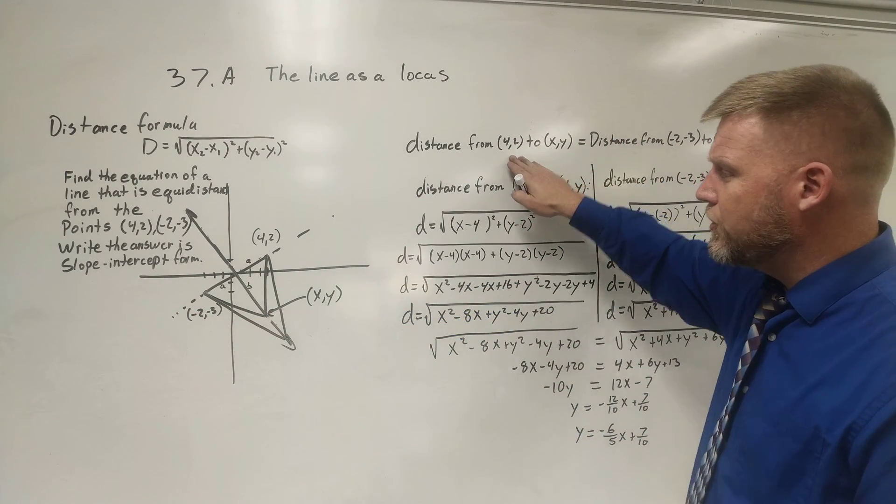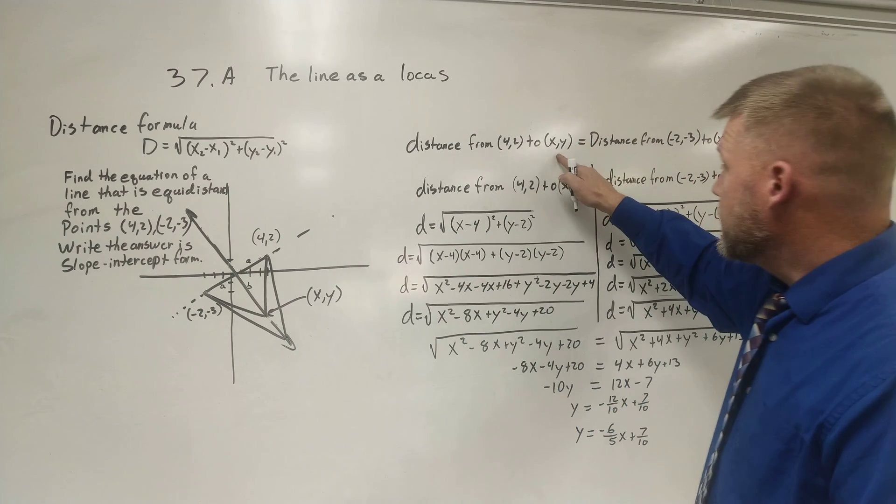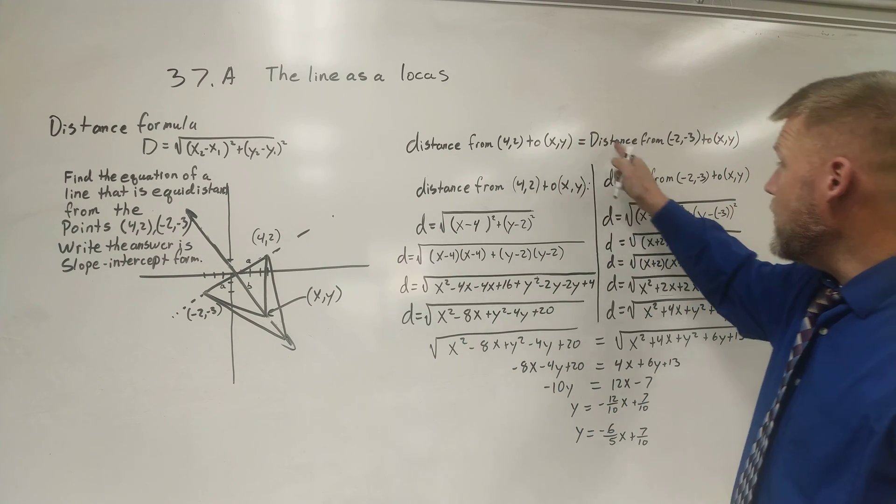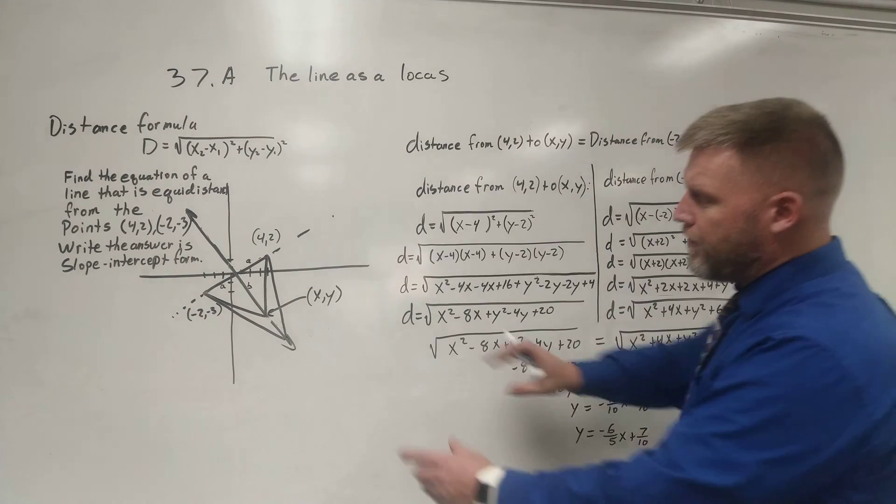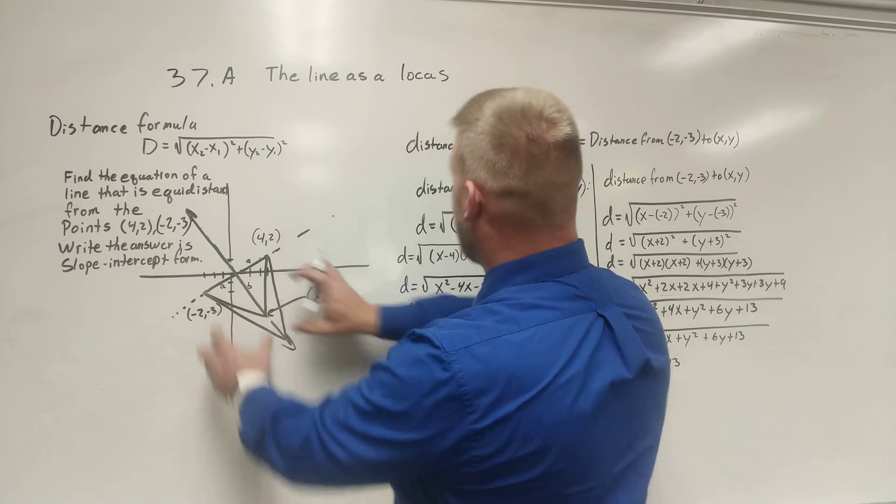The distance from 4 comma 2, there it goes, to x comma y equals the distance from negative 2 comma negative 3 to x comma y. So I know that these two distances are the same.